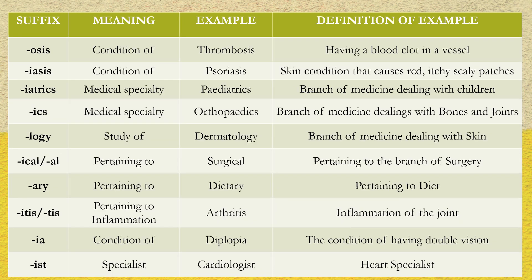Next up are the commonly used suffixes — that is, the attachments after the root word — and their meanings. Words ending with '-osis' meaning any condition of the root word. The suffix '-itis' is the most common suffix for many diseases, like arthritis, colitis, nephritis, hepatitis, rhinitis, sinusitis, and so on.